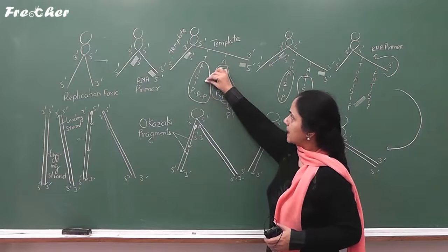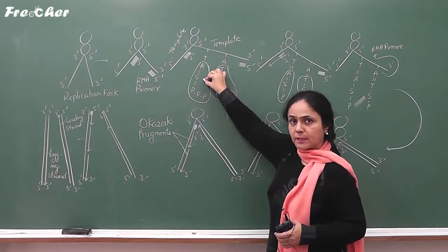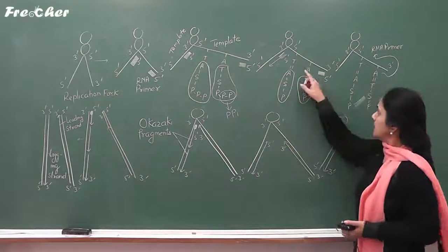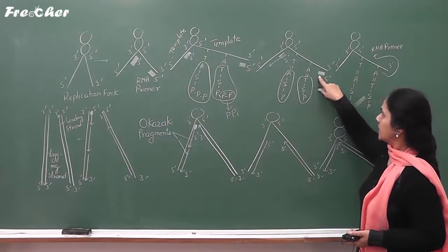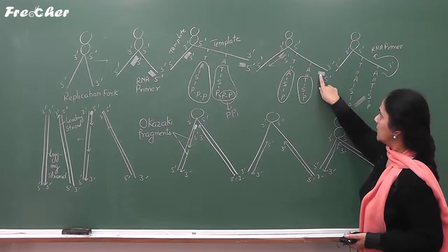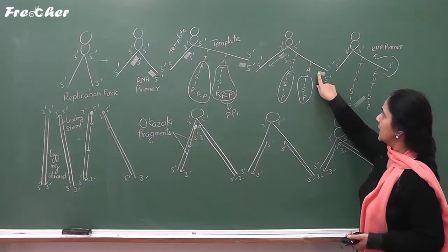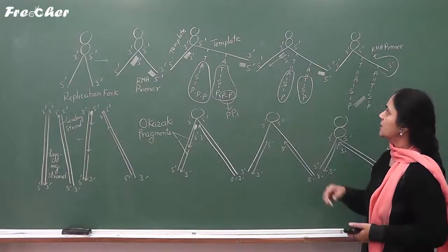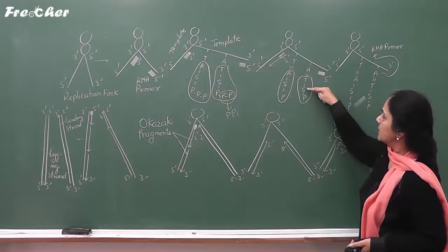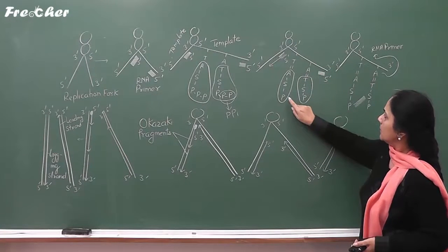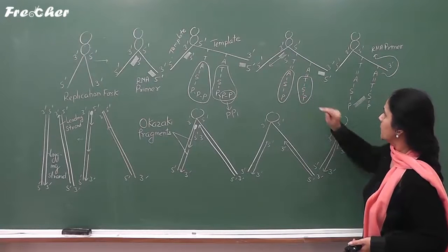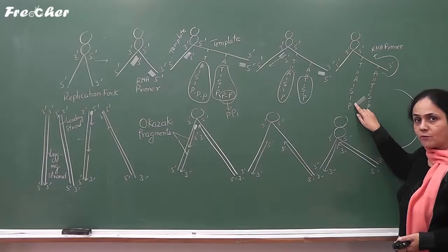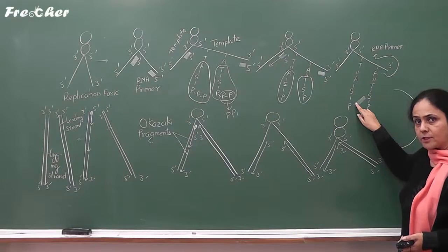Similarly, this activated DNA nucleotide becomes a normal nucleotide. In this diagram, this is the RNA primer. This is a normal DNA nucleotide present towards the 3' end of the RNA primer. This is another DNA nucleotide present towards the 3' end of the previous nucleotide. A phosphodiester bond is formed between adjacent DNA nucleotides of the new strand which is under formation.